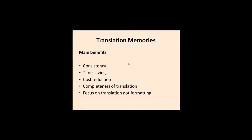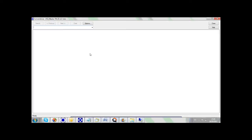Let's finish this presentation with the main benefits that TM usage can provide. The first one is consistency: by using the translation memory technology, we are ensuring that the translated documents are consistent in style and terminology. This is very important for long-term projects or accounts, or when using several linguists on the same project. The translation memory can also serve as a terminology repository, since linguists can perform terminology searches as they work on the translation.